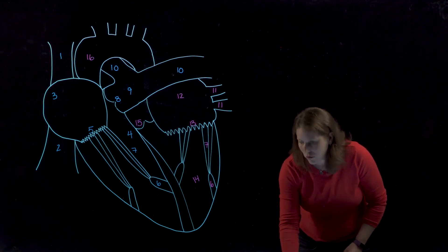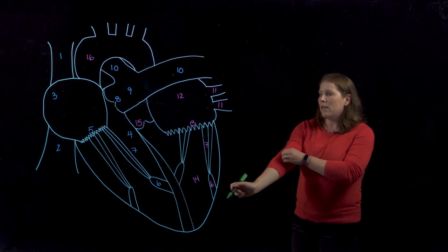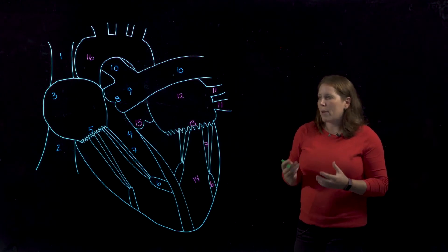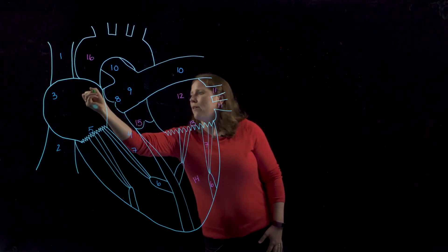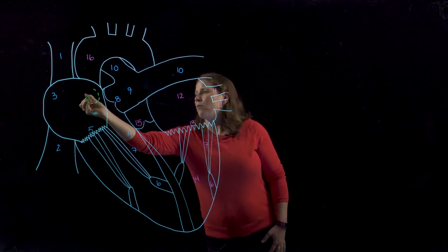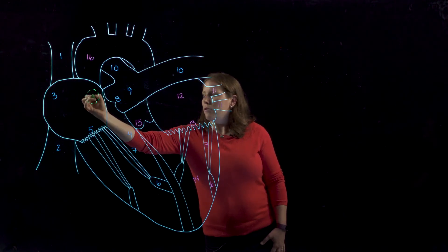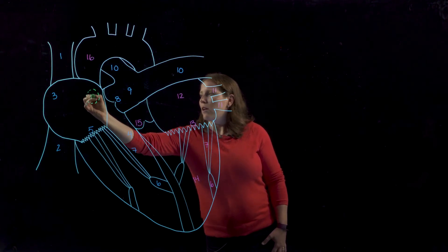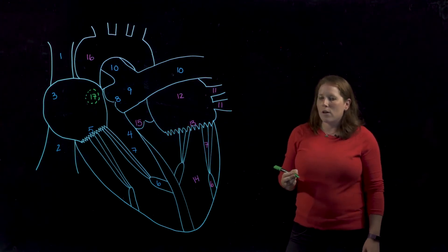Now there are two additional anatomical features that I want to show you on the heart that can be seen in an adult heart that are remnants of fetal circulation. So here in the wall of the right atrium there is an oval-shaped depression that in the adult heart we call the fossa ovalis.